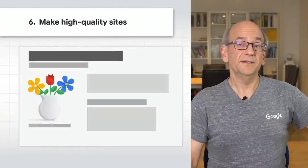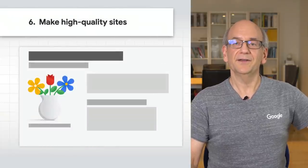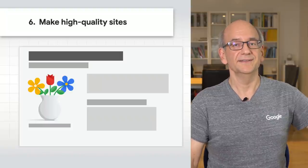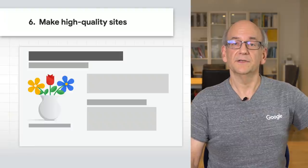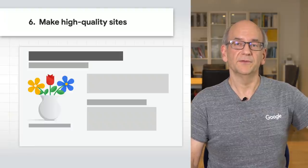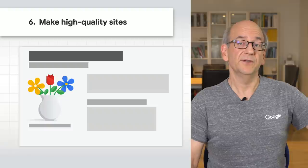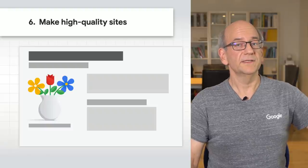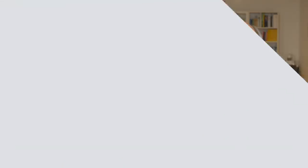Create informative and high quality sites. Good content on your pages is just as important as visual content for Google Images — it provides context and makes the results more actionable for users. Page content may be used to generate a text snippet for the image, and Google considers page content quality when ranking images.